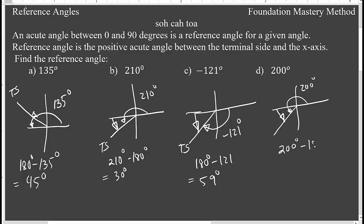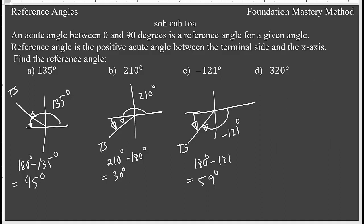If it is 200 degrees, my reference angle is 200 minus 180, which gives me 20 degrees. Now I'll take another example: suppose I'm interested in finding the reference angle of 320 degrees.